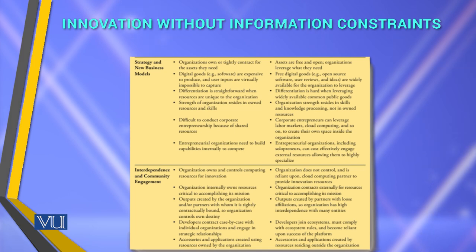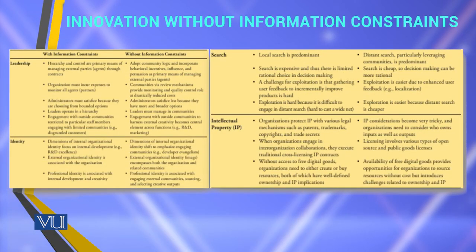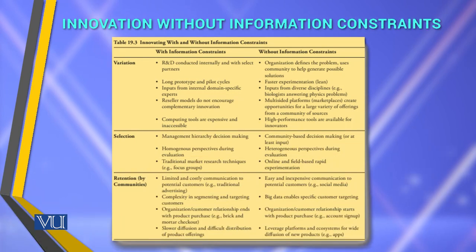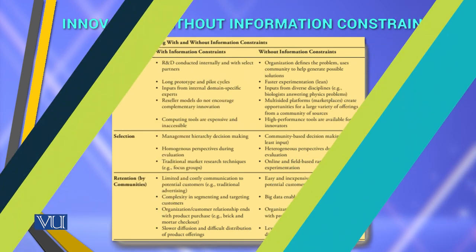Then it comes to interdependence and community engagement. It comes to the four-quadrant model where leadership, identity, search, and intellectual property are considered. Then variation, selection, and retention by the communities, as already discussed in detail. This gives the overall informational constraint — how to unlock and move into different places, whether innovation without information could be constrained. Thank you very much.